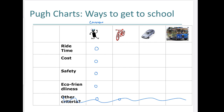Now let's do a variable scoring approach, ranging from negative three to positive three. For the bike: ride time is a plus one since it's faster. Cost is a negative one because it costs money to buy a bicycle. Safety is a plus one — better than walking. Eco-friendliness is a zero because it's the same as walking.